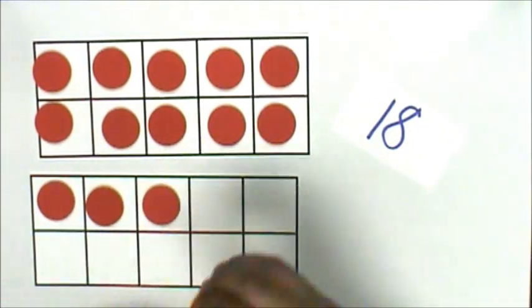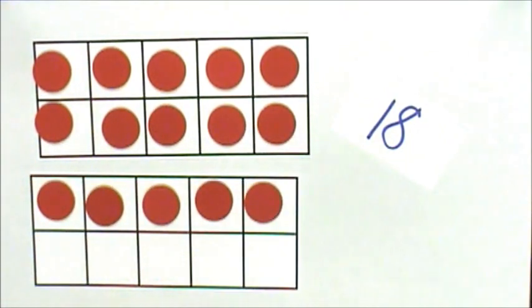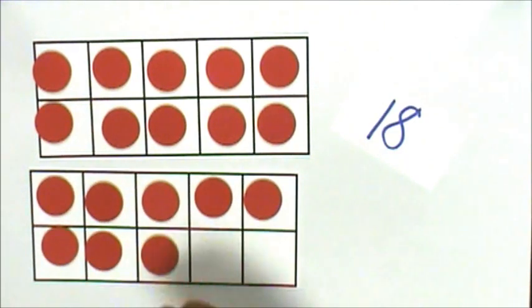One full row is five, so that's fifteen, sixteen, seventeen, eighteen.